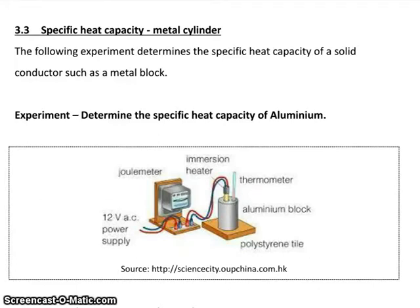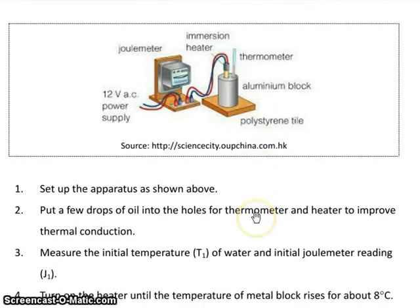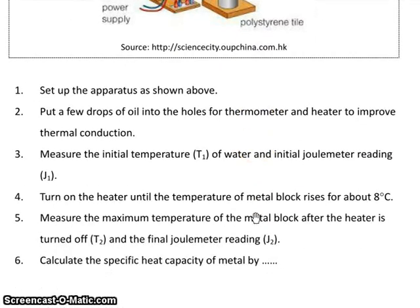So what you saw from the video is how we may measure the specific heat capacity of an aluminum block. We measure the initial temperature, the initial joulemeter reading, and the final temperature and final joulemeter reading as well.